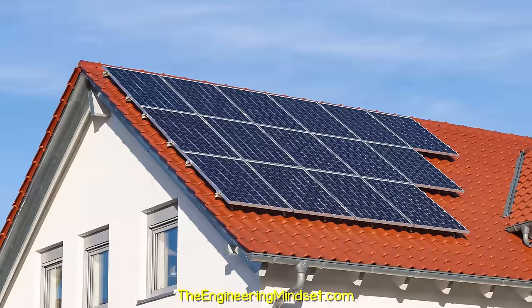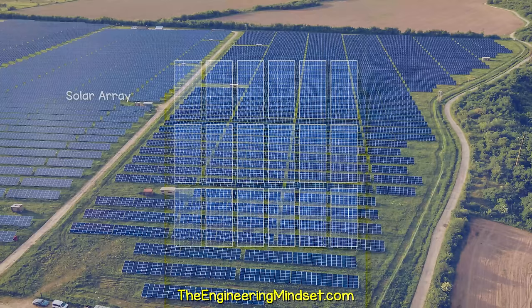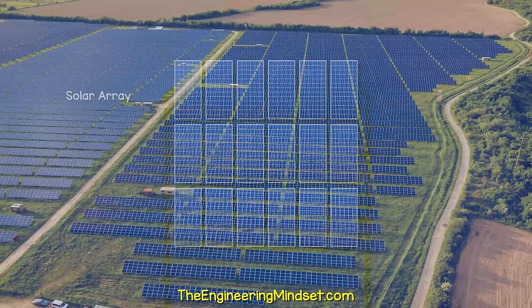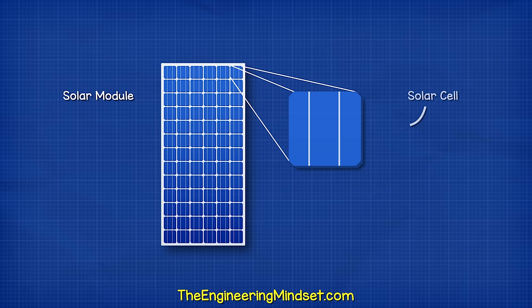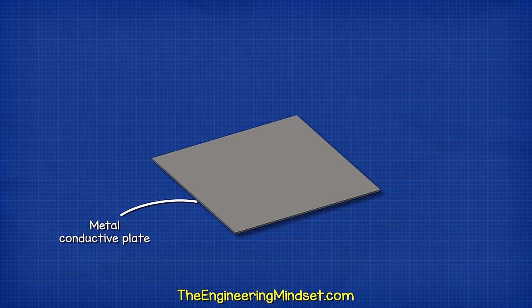You have probably seen solar cells on your calculator or your garden lights. They're often used in motor homes and boats. We see them on houses and even vast solar arrays in fields. An array is just multiple strings of solar modules connected together. A string is just multiple solar modules connected together. And a solar module is just multiple solar cells connected together.